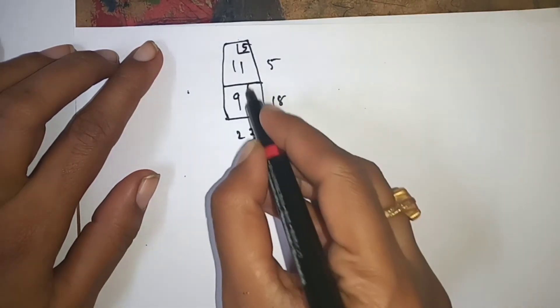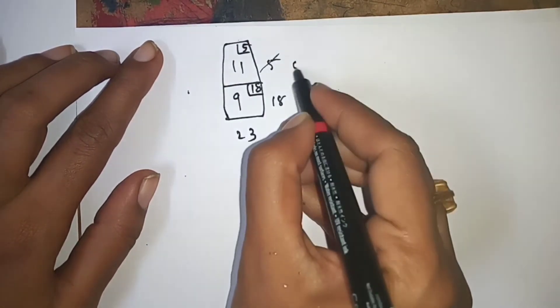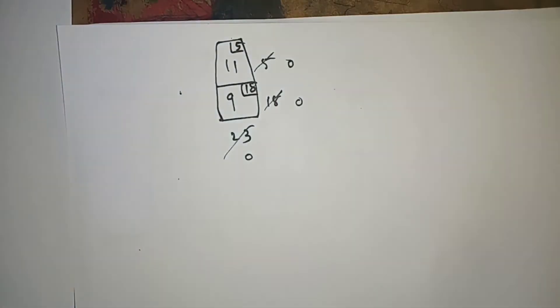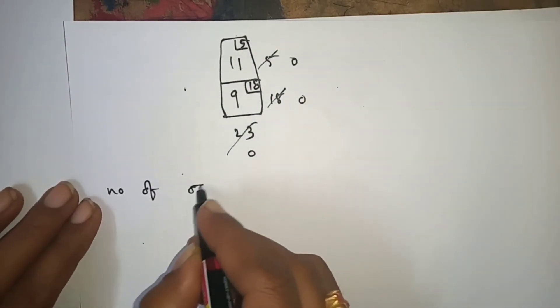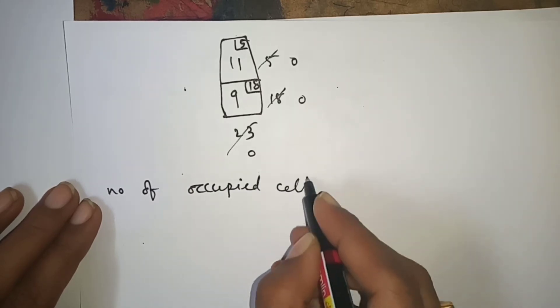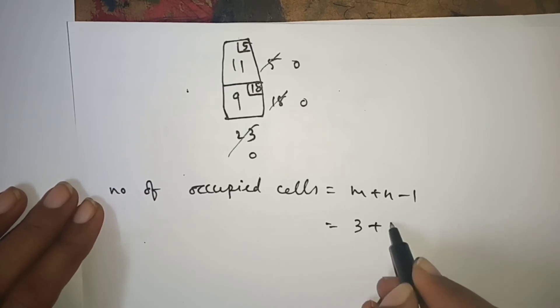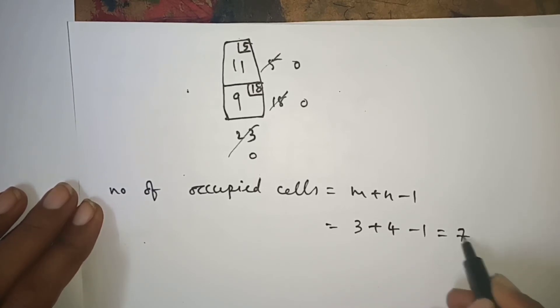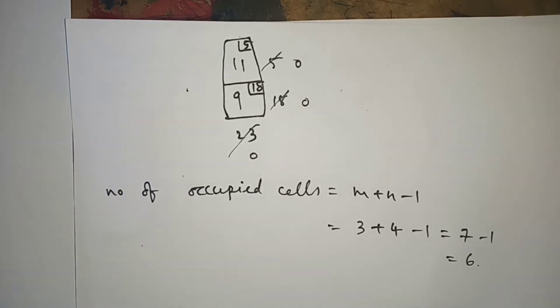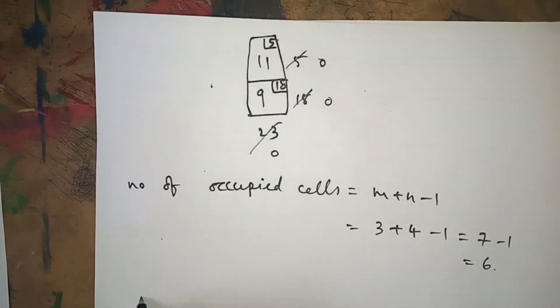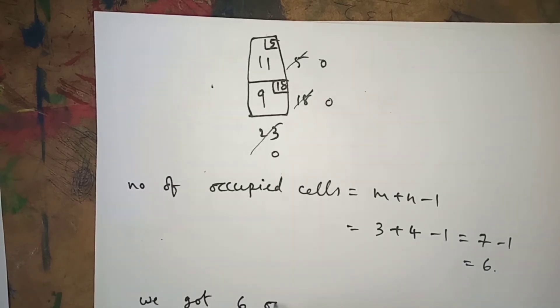Here we used 5, here 18, then 5 plus 18 is 23, and all cells got 0. Now, the number of occupied cells must equal m plus n minus 1. m is the number of rows = 3, number of columns = 4, so 3 plus 4 minus 1 equals 6. Counting the occupied cells: 1, 2, 3, 4, 5, 6 — we got 6 occupied cells.